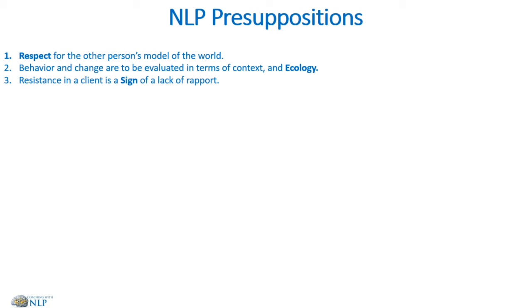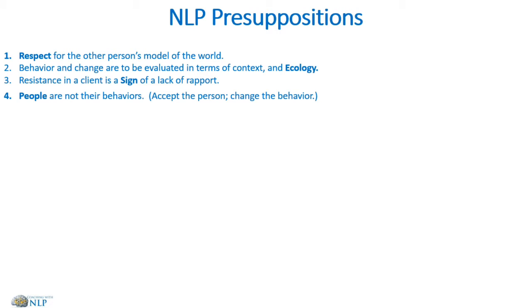The next presupposition: resistance in a client is a sign of lack of rapport. There are no resistant clients, only inflexible communicators. Effective communicators accept and utilize all communication presented to them. We want to create a safe space for our client where they can feel comfortable and free of judgment. When trust is not there or we're not able to communicate effectively, then probably there's no rapport.